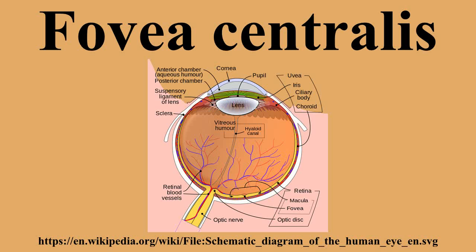The foveal pit is surrounded by the foveal rim that contains the neurons displaced from the pit. This is the thickest part of the retina. The fovea is located in a small avascular zone and receives most of its oxygen from the vessels in the choroid, which is across the retinal pigment epithelium and Bruch's membrane. The high spatial density of cones along with the absence of blood vessels at the fovea accounts for the high visual acuity capability at the fovea.